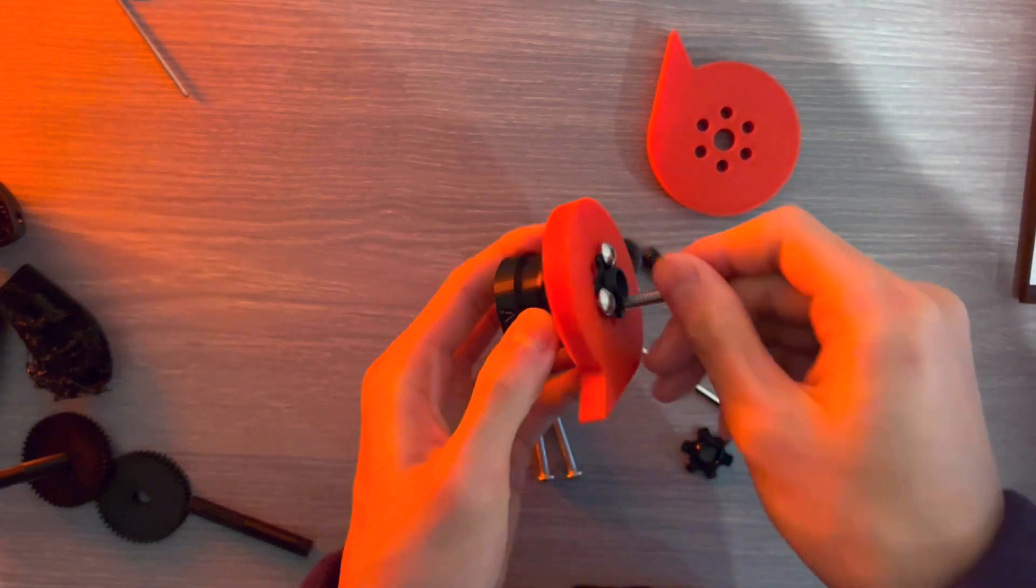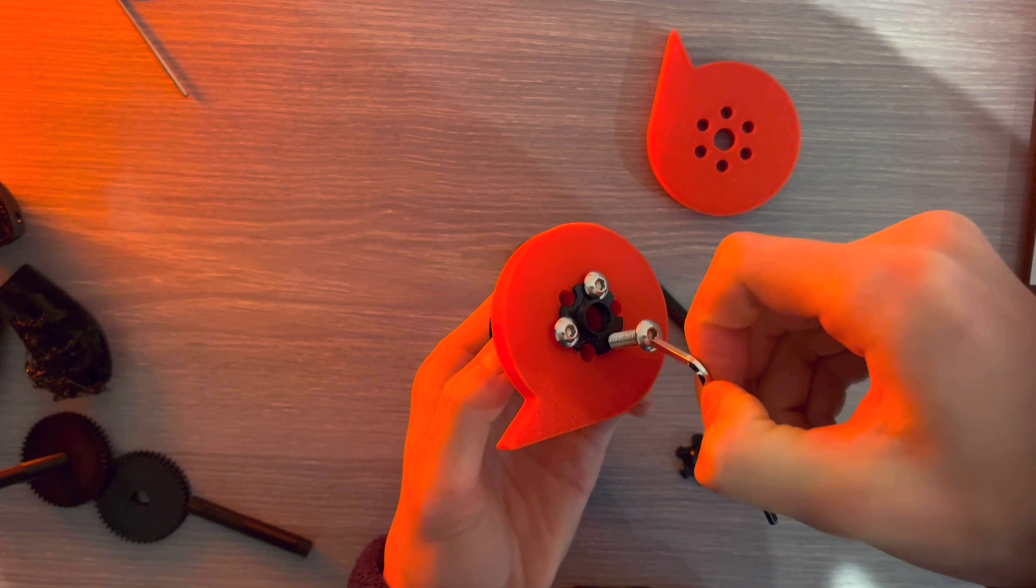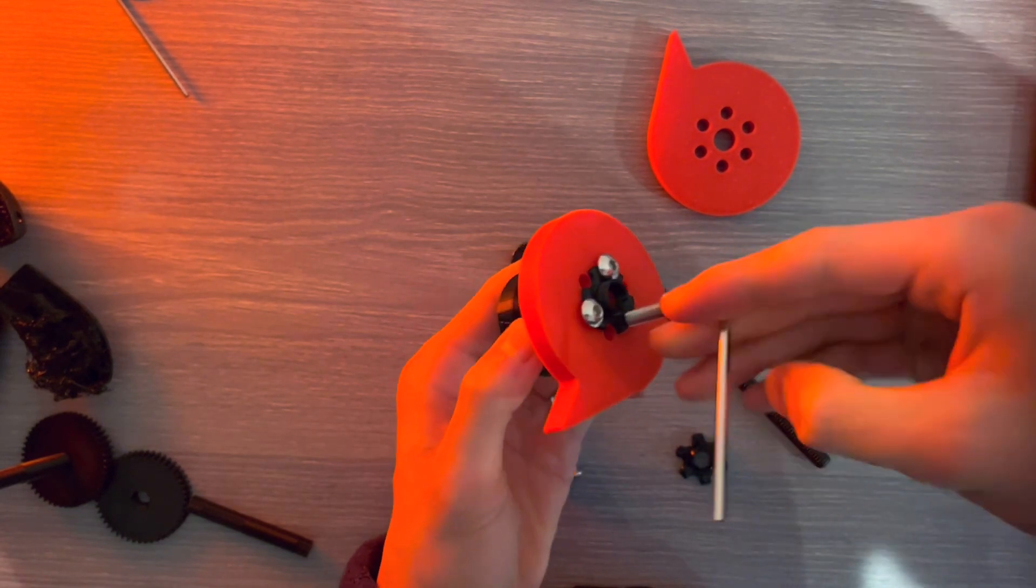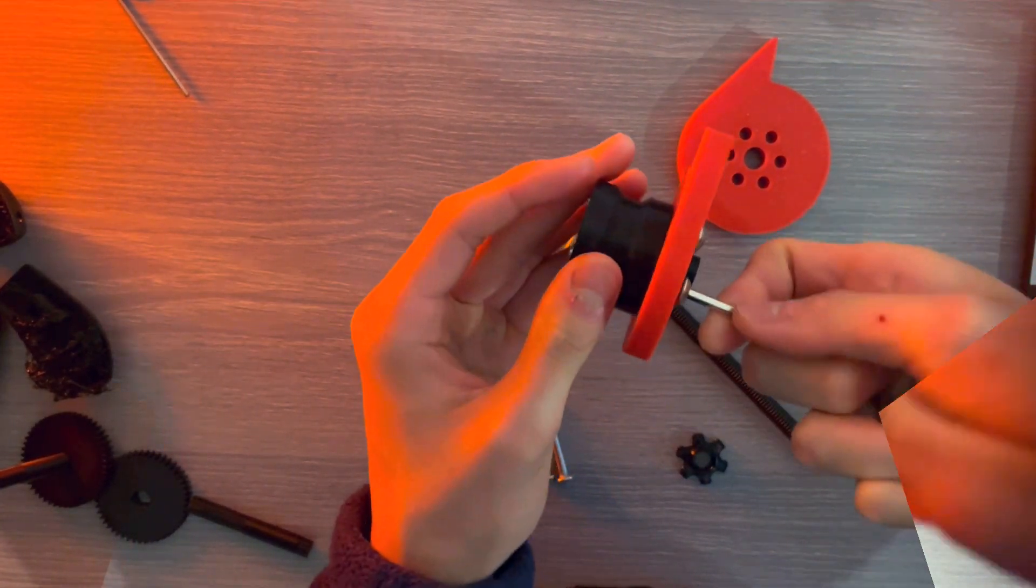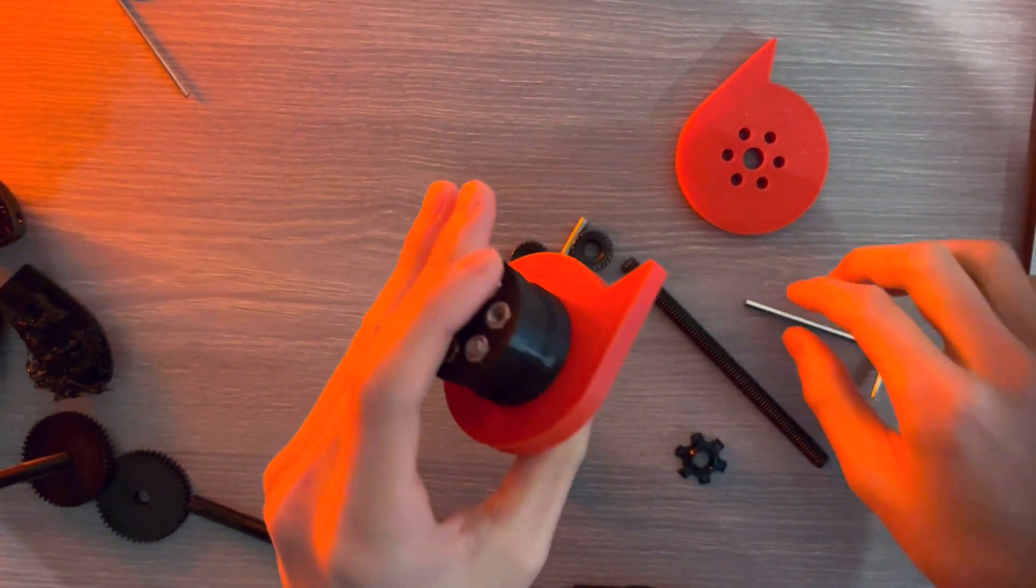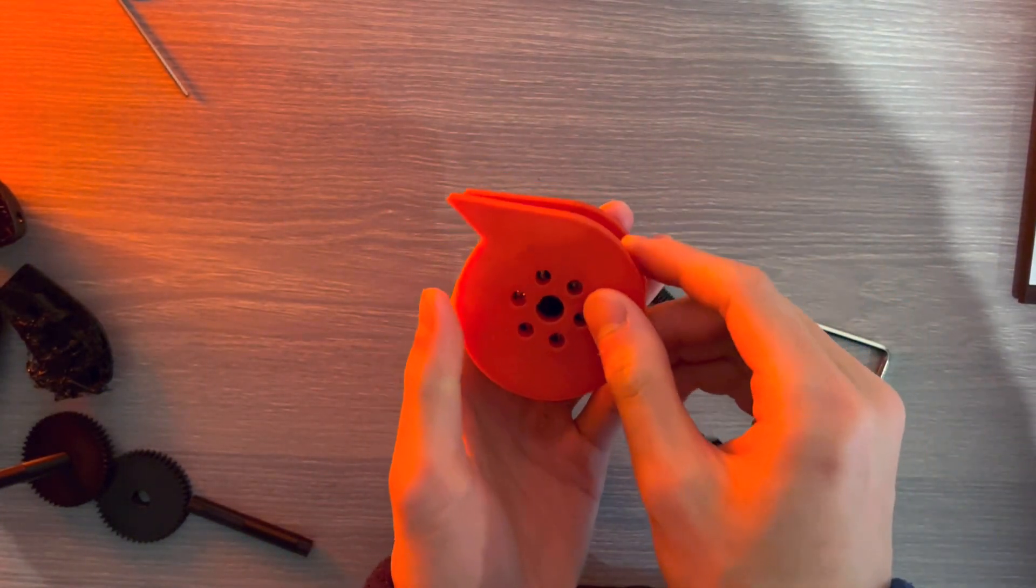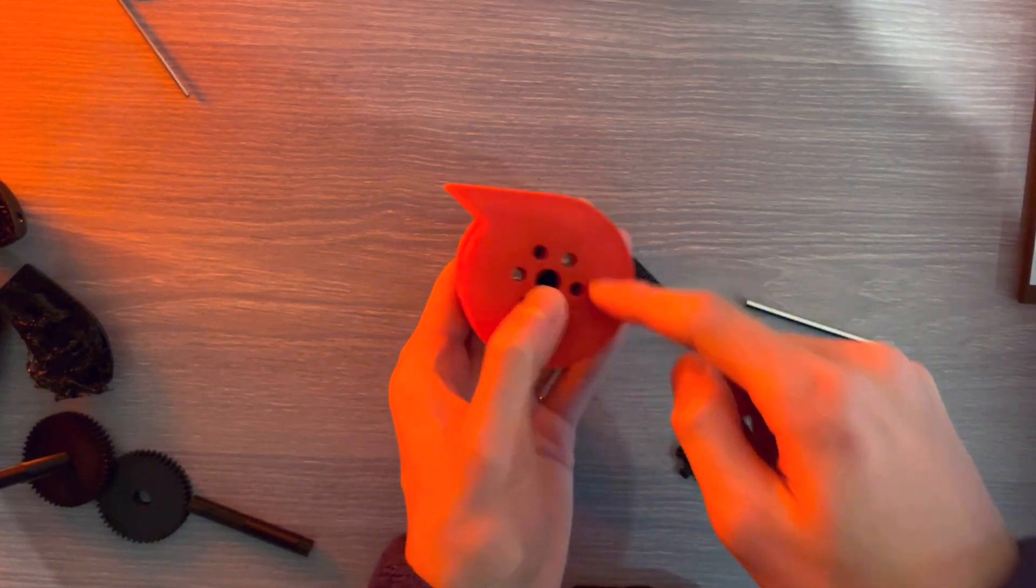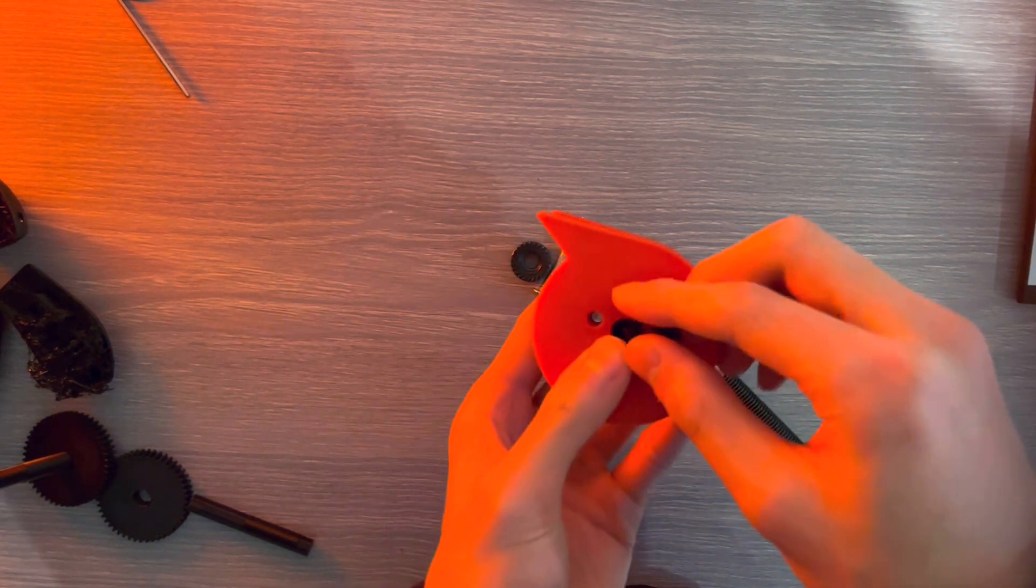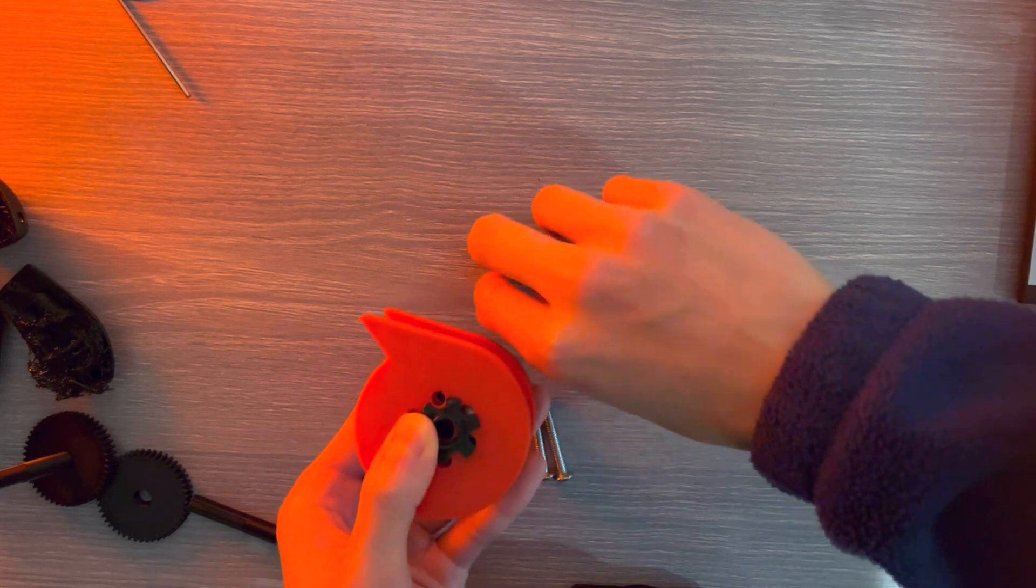So another screw goes in, and this will be the last screw, and then the first side will be complete. And just like that. Now we have one side complete. Simply put on the other side, and there's obviously three more screws to be put in. Slide on the spacer and start screwing these in.